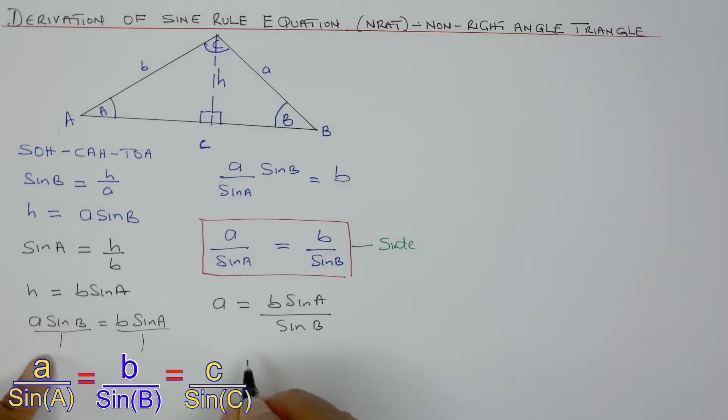And also, to find B, just take sine B over to that side. So B will become A sine of B over sine of A. That's how to rearrange it to suit your need.